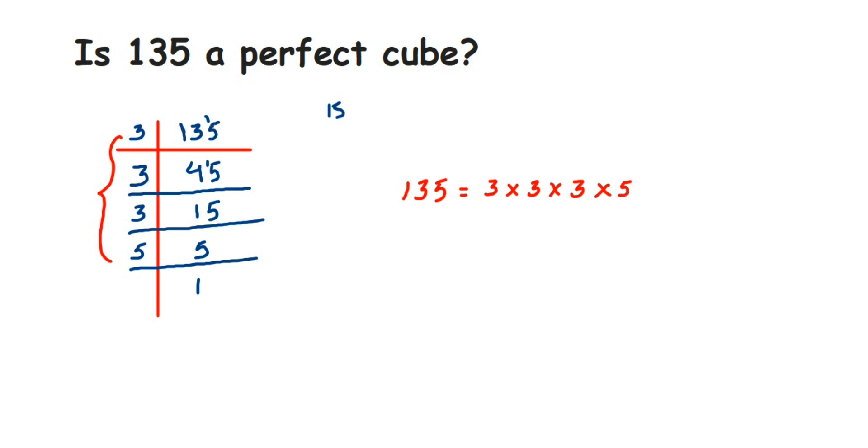Now if you observe here, we have to form a triplet, that is a triplet of the same factor. Like 3, it is forming a group of 3, right? The factor 3 is 3 times here. But 5, if you see, it is only 1 time. We should form a triplet here.